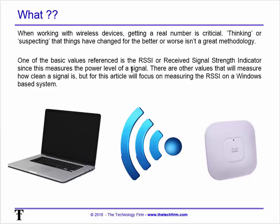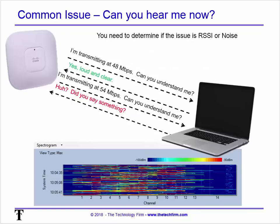The other part of wireless analysis covers the quality of the signal — how clean is it? Think of your radio: you can change stations and you have a volume button. RSSI is the volume button. A common issue is 'can you hear me now?' — you want to make sure the access point hears the laptop as well as the laptop hears the access point, and that may change depending on the rate you're transmitting at.